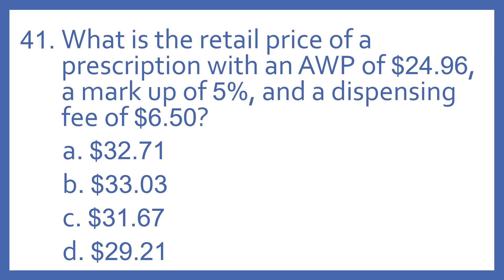Number 41. What is the retail price of a prescription with an AWP of $24.96, a markup of 5%, and a dispensing fee of $6.50? A. $32.71. B. $33.03. C. $31.67. D. $29.21.